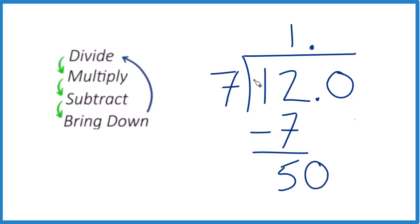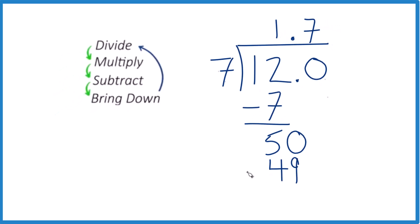So now we go back up to the top — divide. 7 goes into 50. Well, 7 times 7, that's 49. So we can then subtract, we get 1, and then we can just bring down again here.